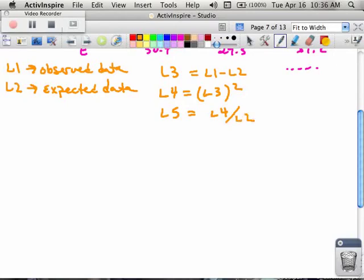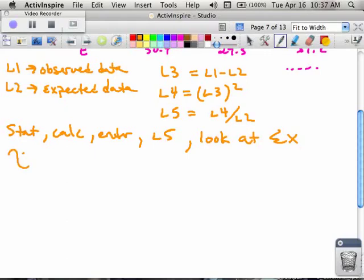And then at the end, after I've done all that, I would go, stat, calc, enter, on L5. Because what you want to do is you want to look at L5's sum. Like, sum of X? So, it's the sum of X, yep. So then, look at the sum of X. Because L5 has everything you need in each pieces, and you just look at the sum of that. Now, if you do that right now, what you should see is the following. You should get that your chi-square is equal to 8.77.